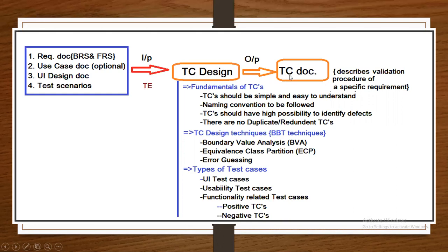What is a test case? The output of this phase is the test case document. It describes the validation procedure of a specific requirement — that is, how to test a particular requirement or functionality in the application, which is described step by step. The test cases should be simple and easy to understand. Naming convention should be followed. Test cases should have a high possibility to identify defects. There should be no duplicate or redundant test cases.